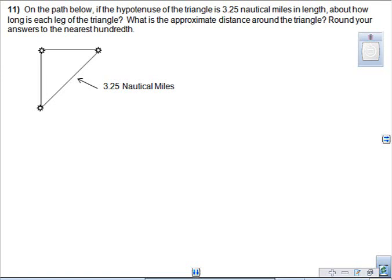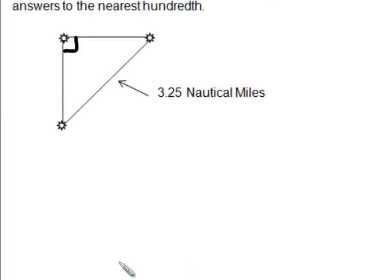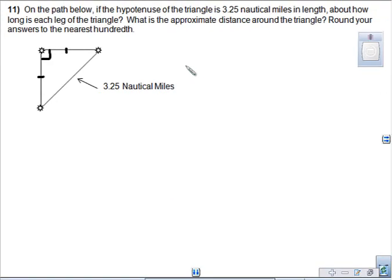This one tells us we have a path with a hypotenuse of 3.25. Well, hypotenuse tells me this is a 90 degree angle. And about how long is each leg of the triangle, what's the approximate distance around the triangle, round your answers to nearest hundredth. You're supposed to be told that this is isosceles, that these are equal. So go ahead and mark that. So here, when you have isosceles triangles, you can use your 45-45-90. You can use trig, or you can even use Pythagorean theorem if you realize that A and B would be equal to each other. So there's plenty of ways to solve this.